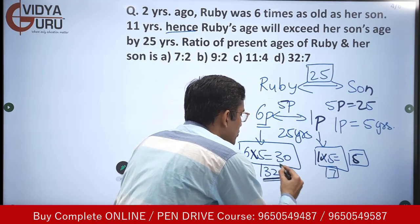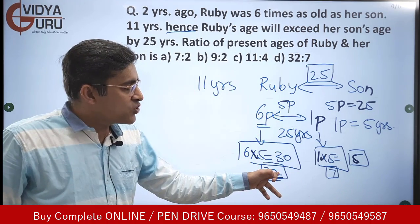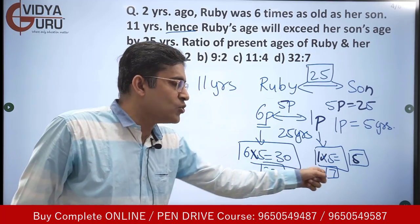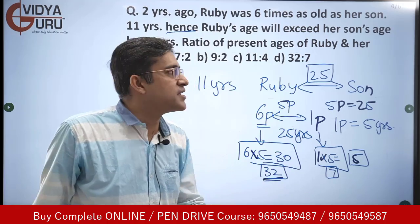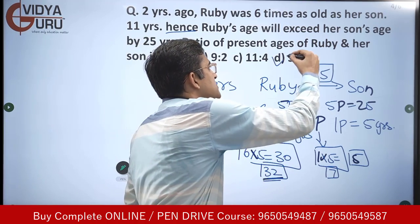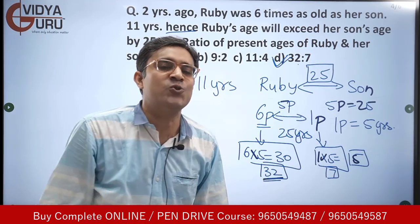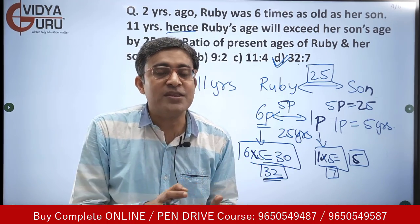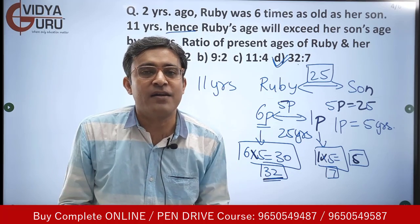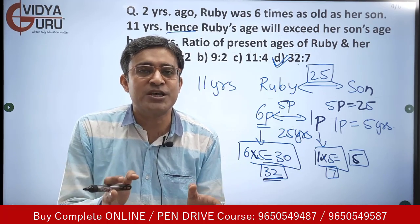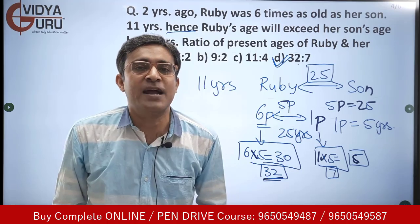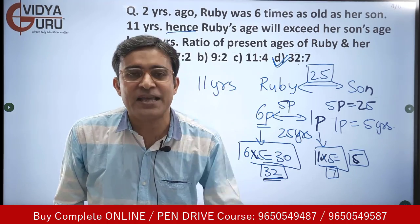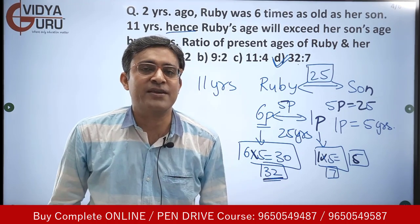They are both two years older today. So the ratio of their current ages is 32:7. Option D — that's the answer. If you liked the way we teach, call us right away, become a part of our online live classes and video courses, subscribe to the channel, share the video, and please like it. God bless you all. Thank you.